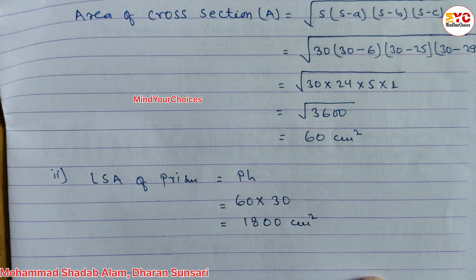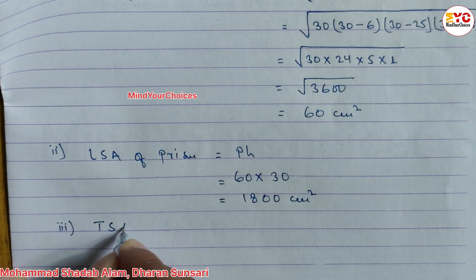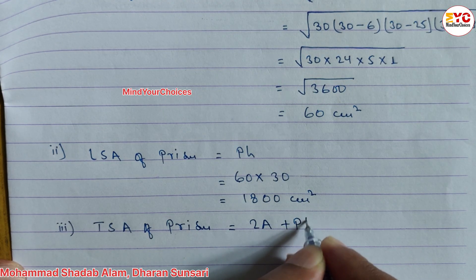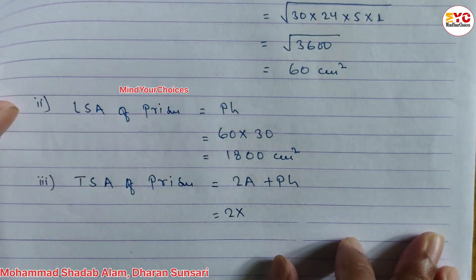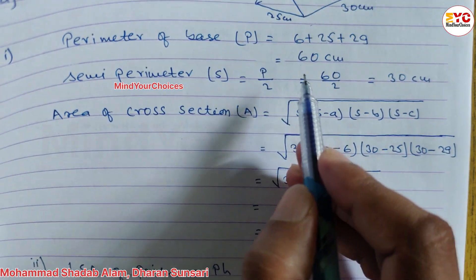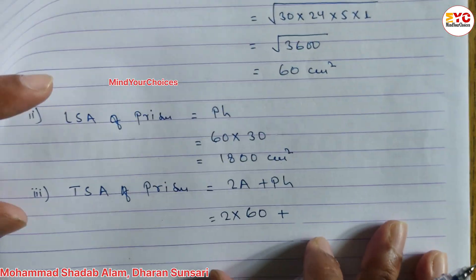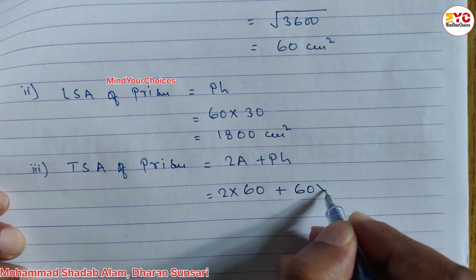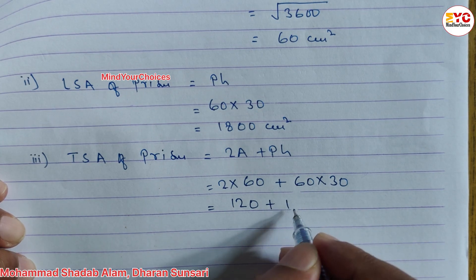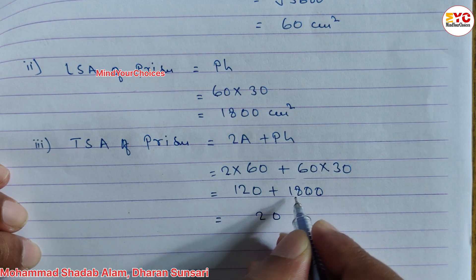After this, we have to find out the total surface area in number 3. TSA of prism formula is 2A plus PH. So 2 into A — area of cross-section is 60 — plus P × H: 60 × 30. So 2 × 60 = 120, plus 60 × 30 = 1800. Add these: 120 + 1800 = 1920 cm square.